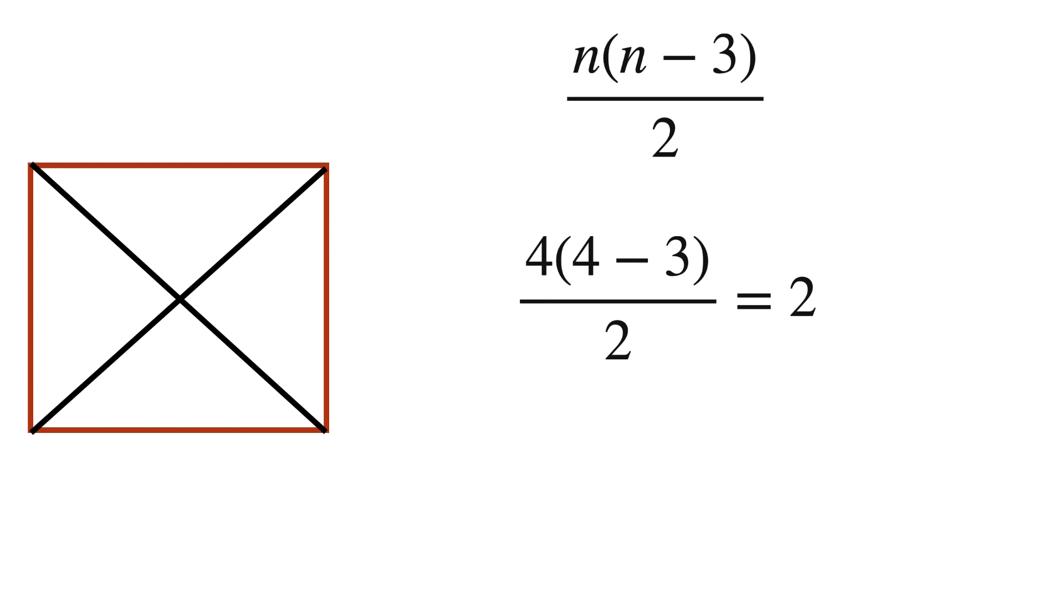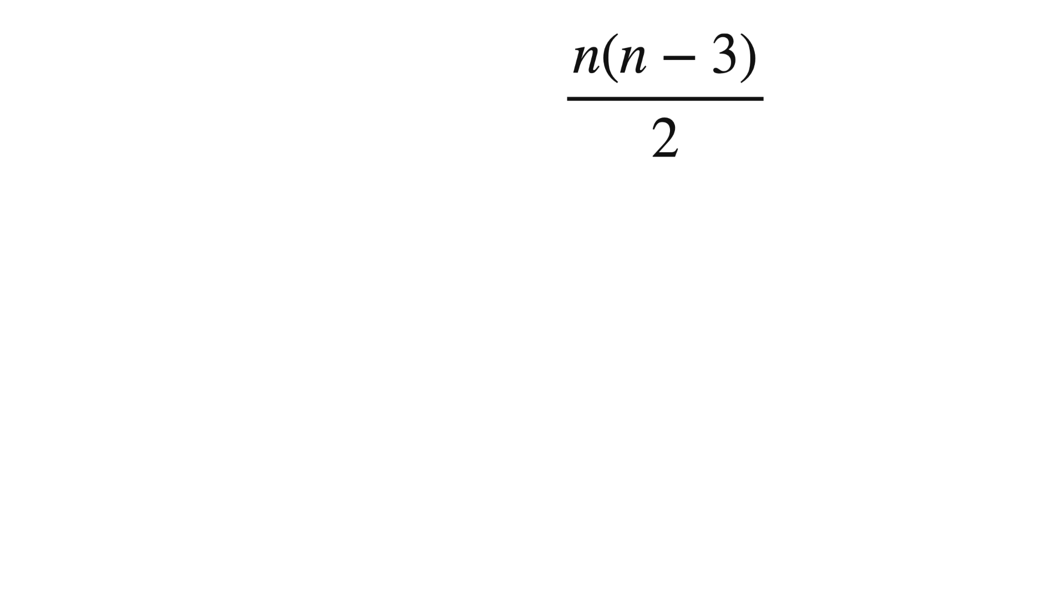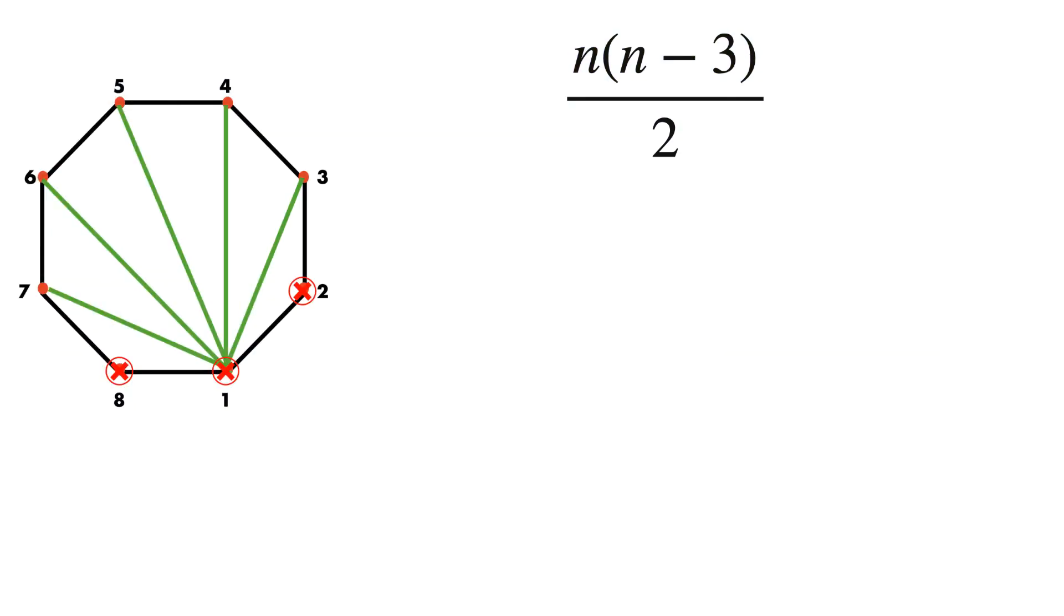Similarly, in octagon, there are 8 vertices. Hence, n is 8. After substituting, expression becomes 8 times 8 minus 3 divided by 2. After solving this expression, the solution is 20.